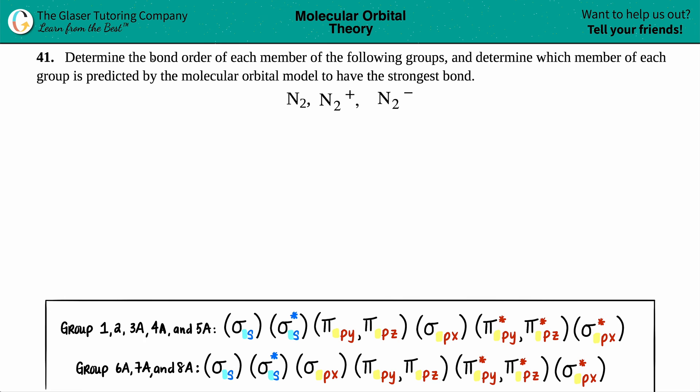Number 41. Determine the bond order of each member of the following groups and determine which member of each group is predicted by the molecular orbital model to have the strongest bond. So we have our little trio here: N2, N2 plus, and N2 minus. We need to find the bond order for each.